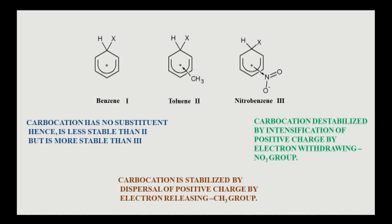The methyl group is responsible for increasing the rate of reaction, so it is called an activating group. An electron-releasing group stabilizes the carbocation by dispersing its positive charge and thus activates the ring, while an electron-withdrawing group destabilizes the carbocation by intensifying the positive charge and thus deactivates the ring. The activating group activates all positions of the benzene ring, but its activating effect is much more on ortho- and para-positions than on the meta-position.